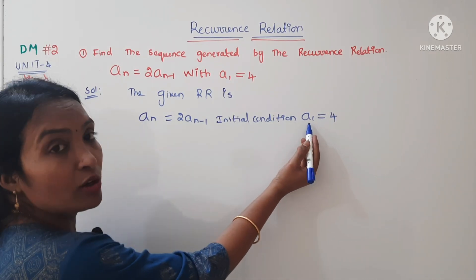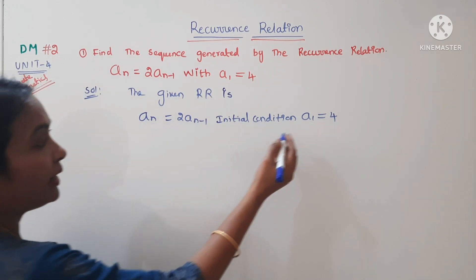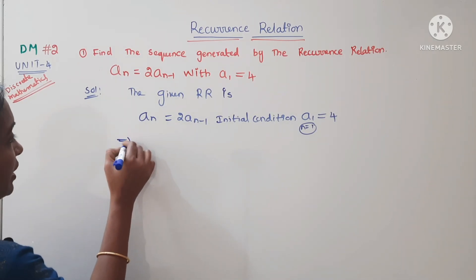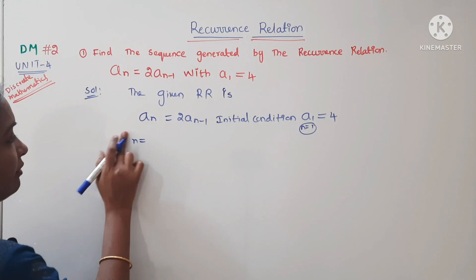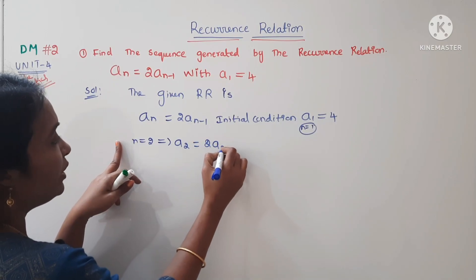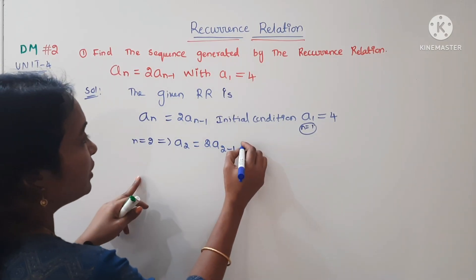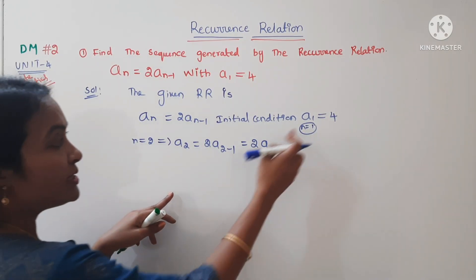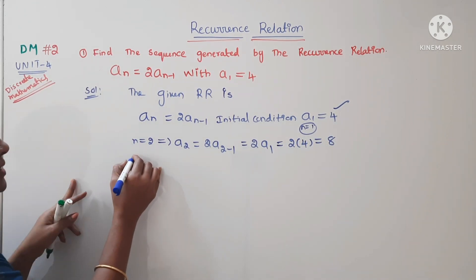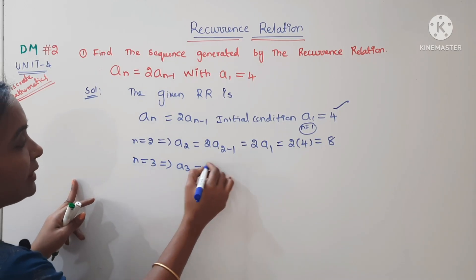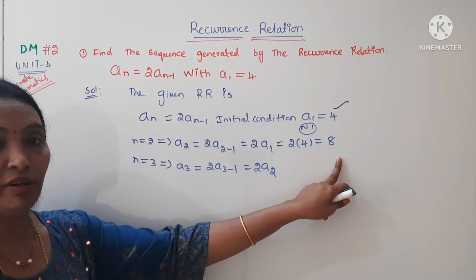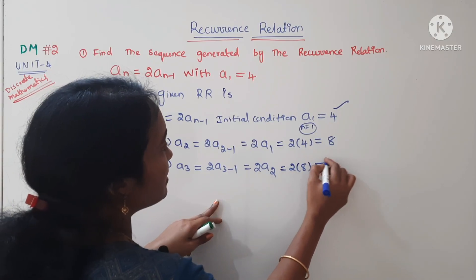We already have a₁ = 4. Now substitute n = 2: a₂ = 2·a₂₋₁ = 2·a₁. Since a₁ = 4, we get 2 × 4 = 8. So a₂ = 8.